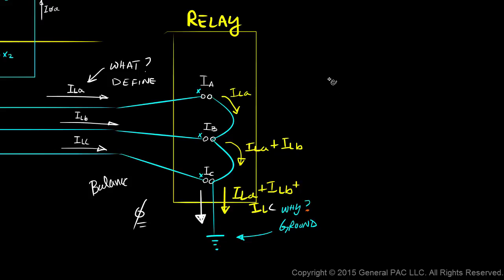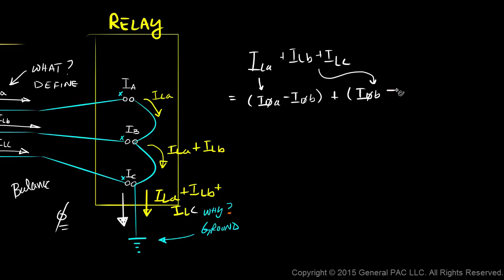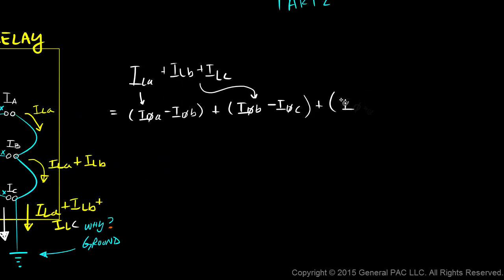Well, let's look at it here. So, we know that ILA plus ILB plus ILC, well ILA essentially equals I phase a minus I phase b. And then ILB equals I phase b minus I phase c. And ILC equals I phase c minus I phase a. What I'm saying is that this current is equal to zero. It's equal to zero because I phase a here and then negative I phase a is there.